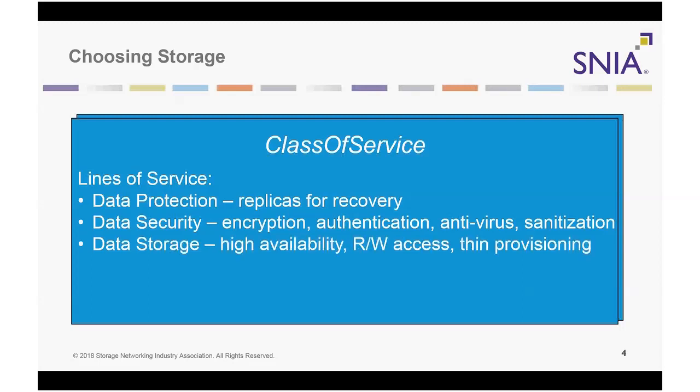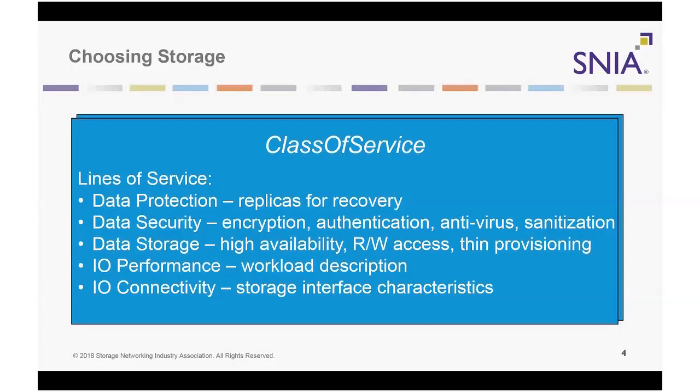The data storage line of service describes high availability data access such as read-only, read-write, or write-once, and thin provisioning requirements. The IO performance line of service describes characteristics of a multi-part storage workload including randomness, IO size, intensity such as IOPS or data rate, as well as expected access density and latency. The IO connectivity line of service describes characteristics of a storage service including protocol and maximum IOs per second.